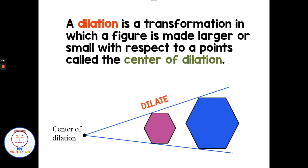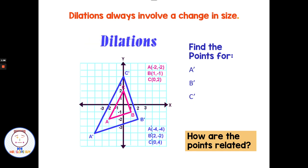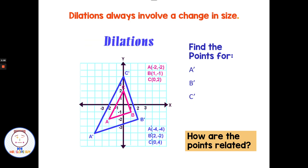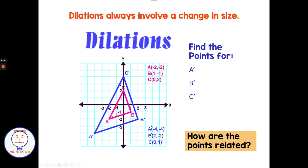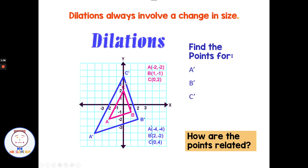I have a graph here showing the center of dilation. We could go from the pink to the blue as an enlargement, or from the blue to the pink as a reduction — both types of dilation. Dilations always involve a change in size, but the original and the image are similar, meaning they're the same shape but not necessarily the same size. We can use prime notation to tell which is the original and which is the image. The original is ABC and the image is A prime, B prime, C prime. Going from small to big is an enlargement.